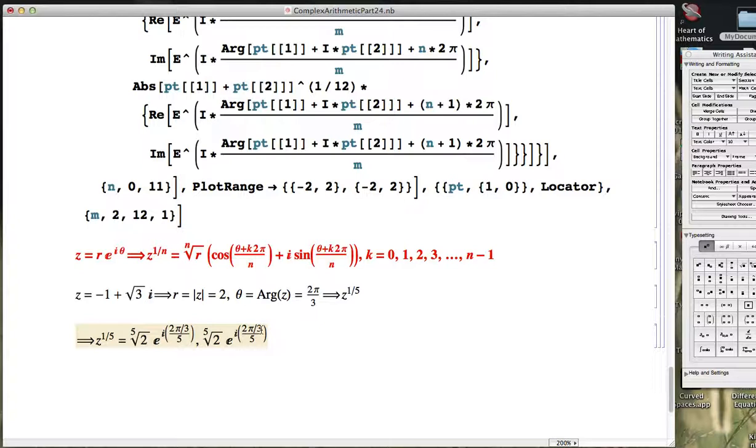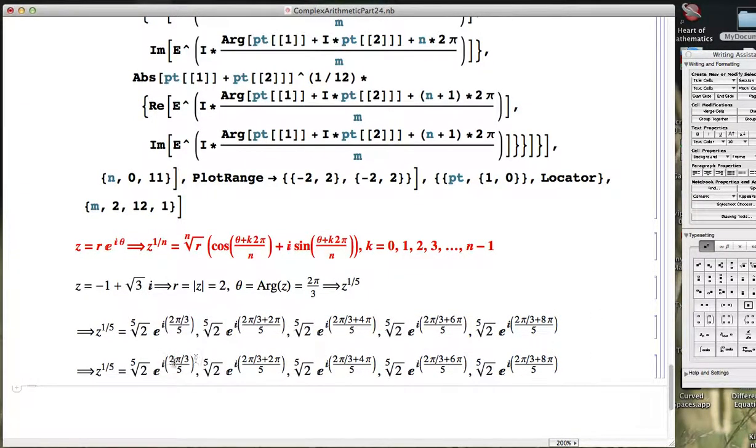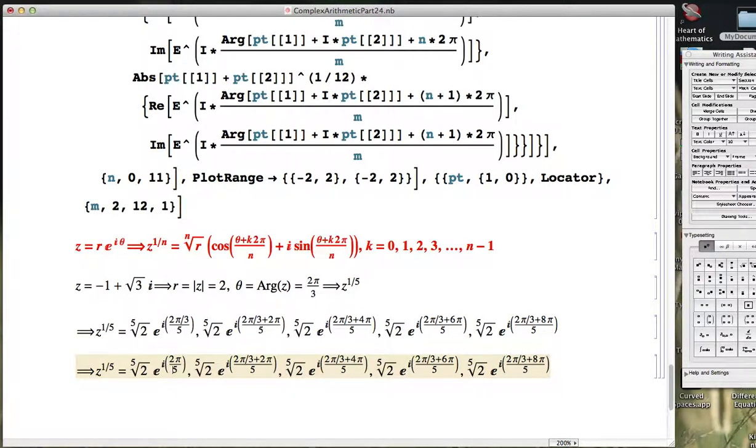The next one, k is going to be 1, so we're going to get a 2 pi up here. The next one, k is going to be 2, so we'll get a 4 pi. Then k will be 3, so we'll get a 6 pi. And finally, the last one, k will be 4, so we'll get an 8 pi here. And then we can simplify this. 2 pi over 3 divided by 5 can be simplified to 2 pi over 15.